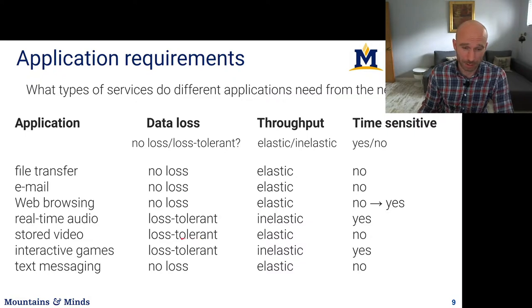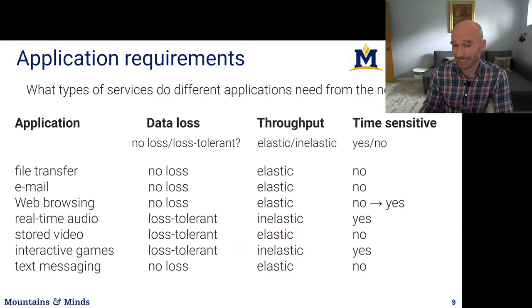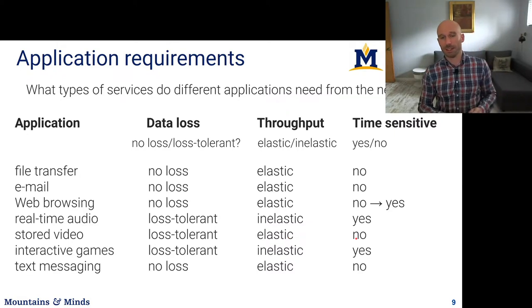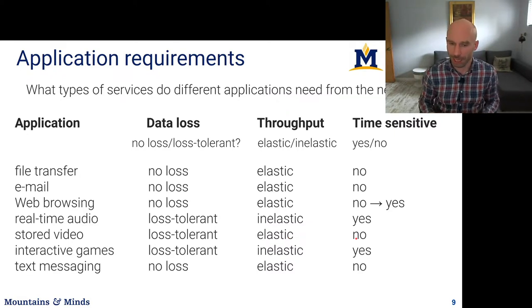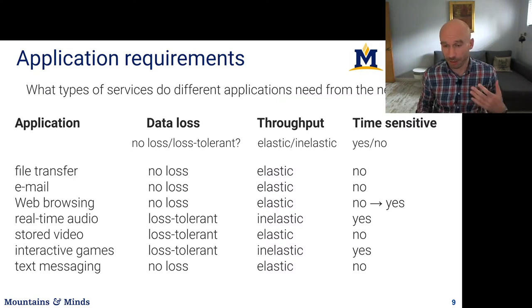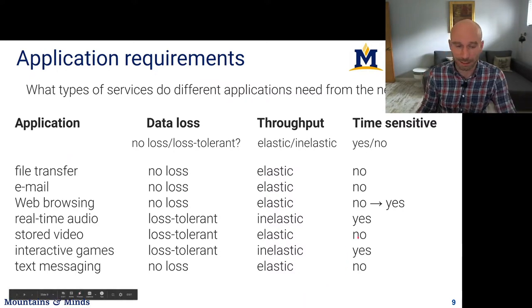Stored video is also loss-tolerant — we can miss some frames and still be relatively happy with replay quality. It is elastic in the sense that video can be encoded at different resolutions; when you have a poor network connection, Netflix drops resolution. And it isn't particularly time-sensitive in that you can buffer video ahead of playback — you can sacrifice 10 or 30 seconds of initial buffering as long as playback remains smooth after that.